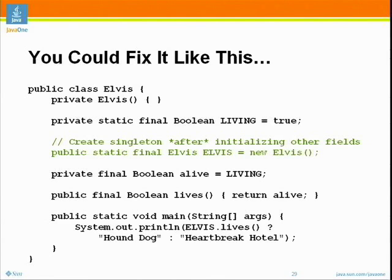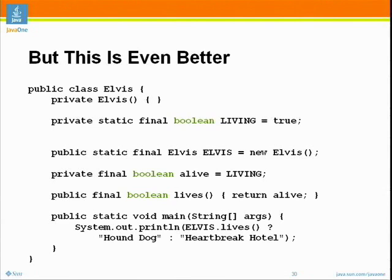But there's a better way to fix it. Why are we using capital-B Booleans? If we simply use lowercase-b booleans — the primitive booleans — the behavior of the program is much more predictable, and generally speaking it'll run faster. You don't want to use those wrapped values unless you have to. I've kept the same order of initialization of the living field and of the Elvis instance, but it turns out it's no longer necessary — even if you swap them, it would still do the right thing, because living is now a true compile-time constant.